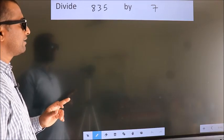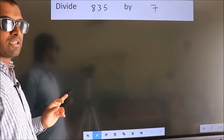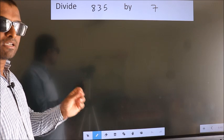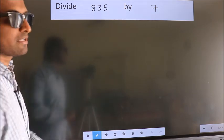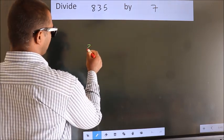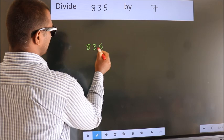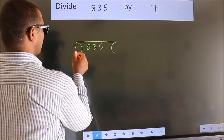Divide 835 by 7. To do this division, we should frame it in this way. 835 here, 7 here.